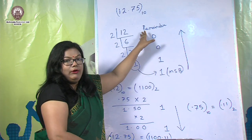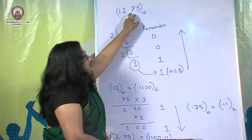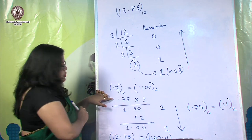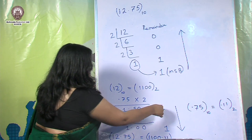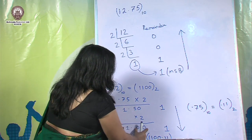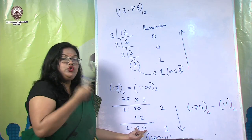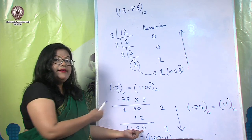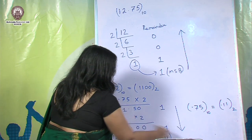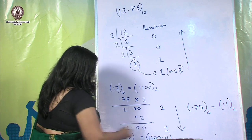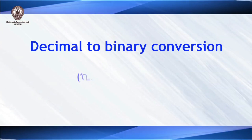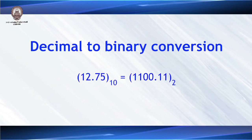For the fractional part 0.75, we multiply by 2. 0.75 × 2 = 1.50, so we keep the 1 as the first fractional bit. Then 0.50 × 2 = 1.00, giving us a second 1. Since we get 0.00, we stop. Reading the bits downward, 0.75 in binary is 0.11. Combining both parts, 12.75 is equivalent to 1100.11 in binary.